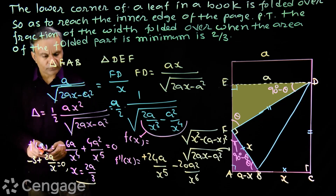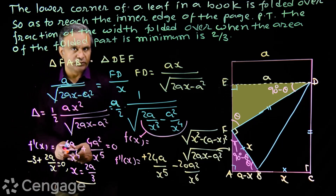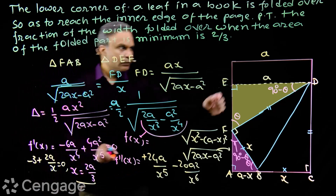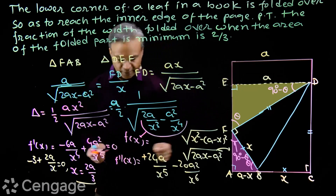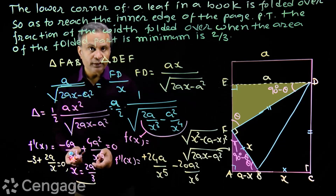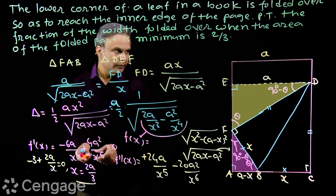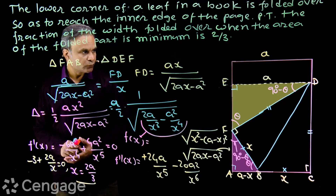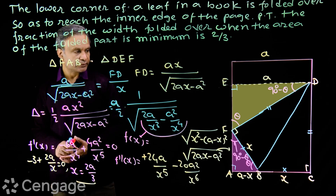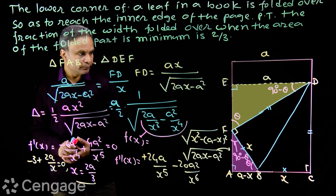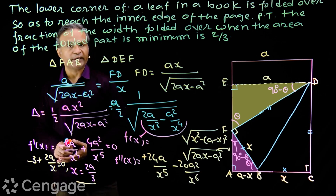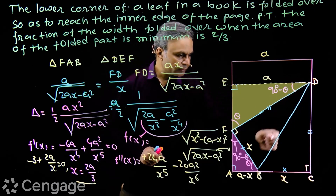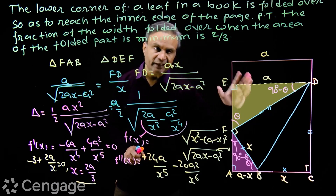So the area is minimum when x equals 2a upon 3. This means the folded width is two-thirds of the actual width when the area of the folded part is minimum, which is exactly what we needed to prove.